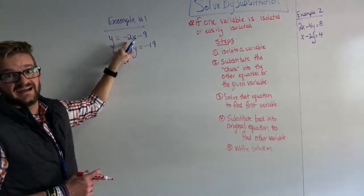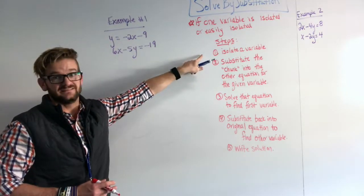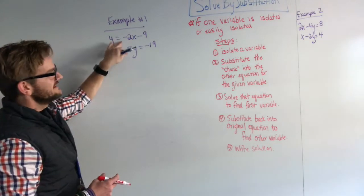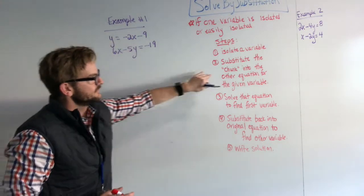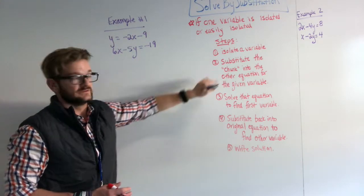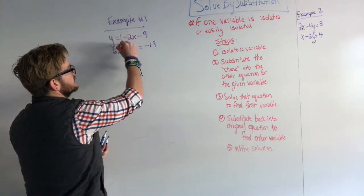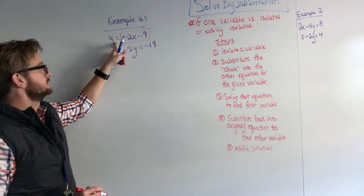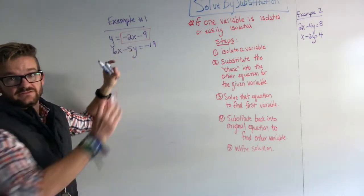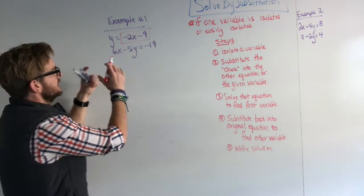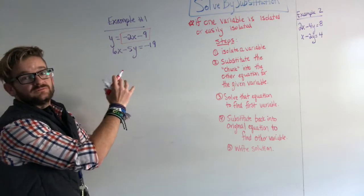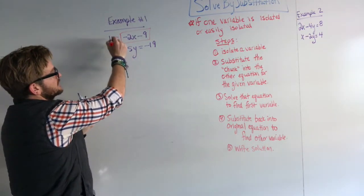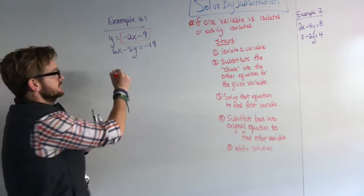Notice that the y is already isolated. That's our first step, isolated variable. If it's not isolated, we need to isolate it. Since it already is, we're going to figure out what this chunk is and we're going to substitute it in. So this chunk is what is equivalent to the given variable. So y is equal to this box, this chunk, and we're going to take that. We're going to substitute that piece in into the other equation and we're going to do it for y.